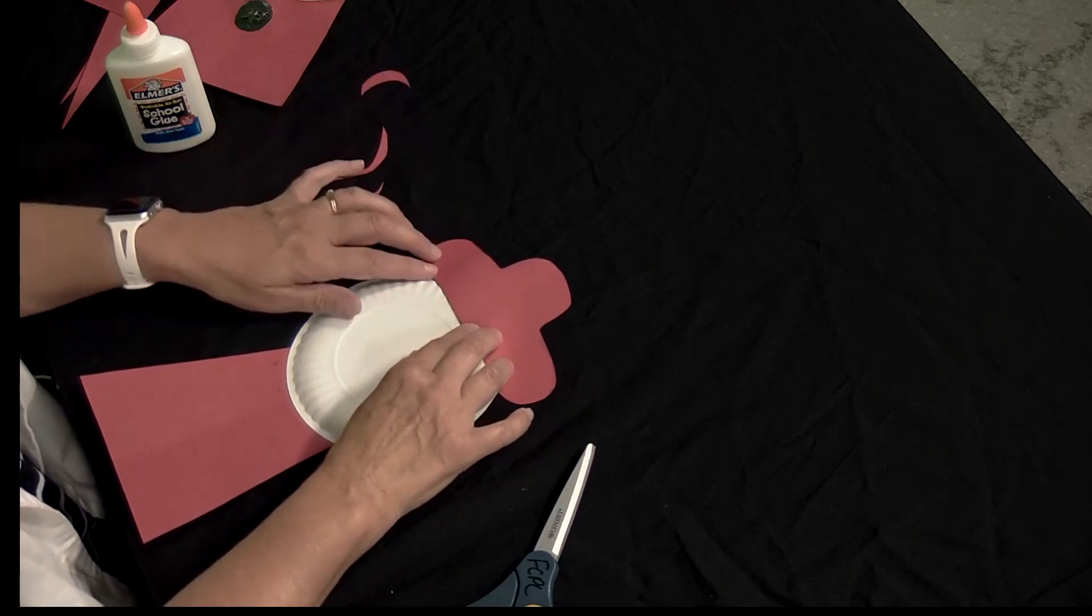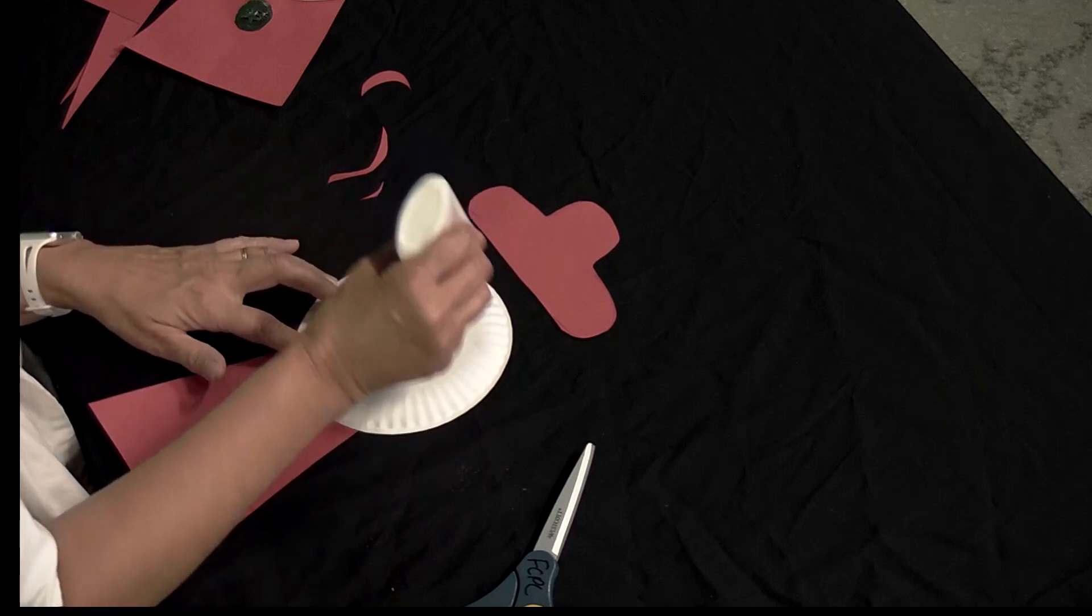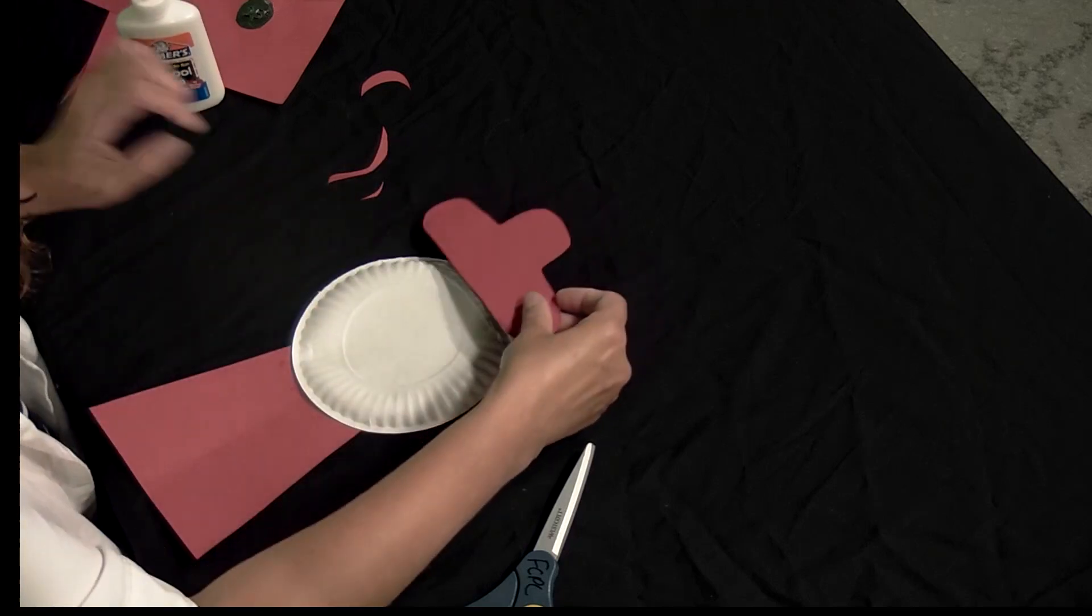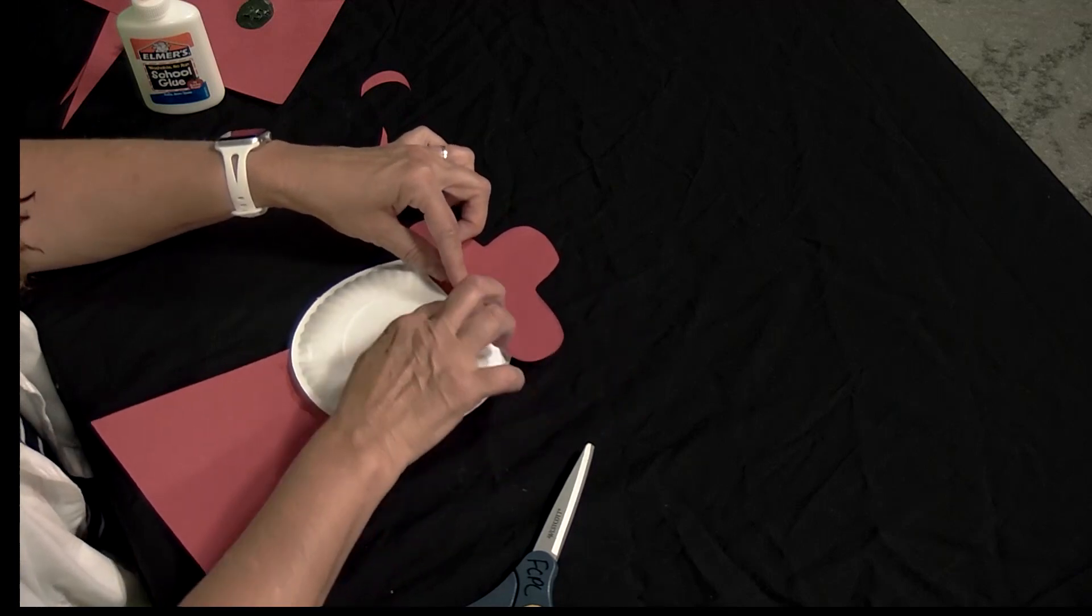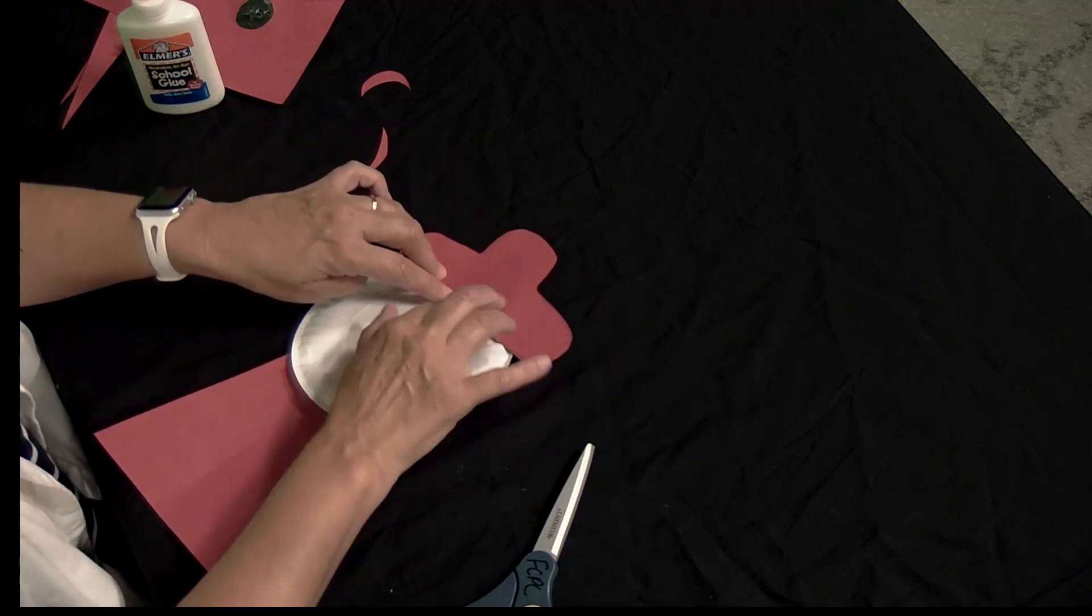And then we're going to be gluing on the outside edge of your bubble gum machine, again on this curved side. You're going to use lots of glue, and then you're going to press it down. It sort of looks like a hat, but it's our bubble gum machine lid.